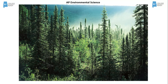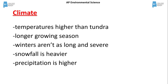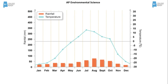The climate in the taiga has temperatures that are higher than the tundra. The growing season is longer, the winters aren't as severe or as long as in the tundra, and precipitation is higher than in the tundra. This climate diagram is typical of a boreal forest. Notice temperatures in the summer are higher than in the tundra and precipitation is higher.